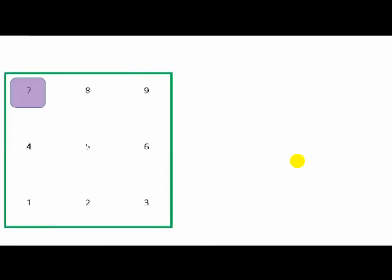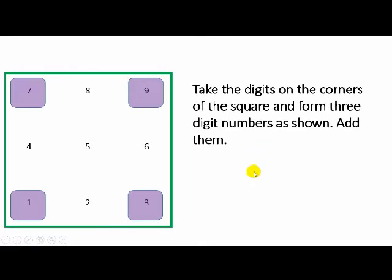Friends, move to the next one. Here, now I take the digits which are on the corners of the square. There are four digits 7, 9, 3 and 1. Here, I form a 3 digit number out of each digit as from 7 I write 777. From 9 I write 999. From 3 I write 333 and from 1 I write 111. I add them together and I find that once again the answer is the same 2220. Friends,